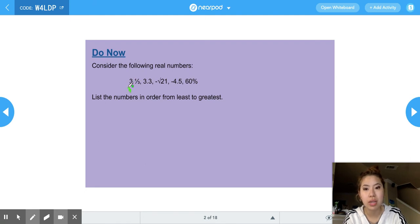So 3 and 1 third is the same thing as 3.333, with the 3 repeating, because if I divide 1 divided by 3, that gives me 0.3 with the repeating 3. Then we have 3.3 is already in decimal form, and then we have negative square root of 21. If I find the square root of 21, I find out that it's 4.58. So negative square root of 21 is negative 4.58. Negative 4.5 is already in decimal form. And lastly, we have to convert 60% into a decimal. 60% is the same thing as 0.6 or 0.60.